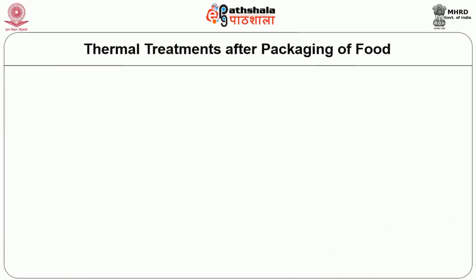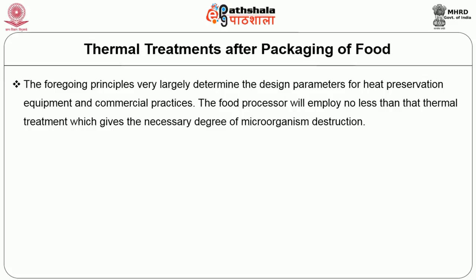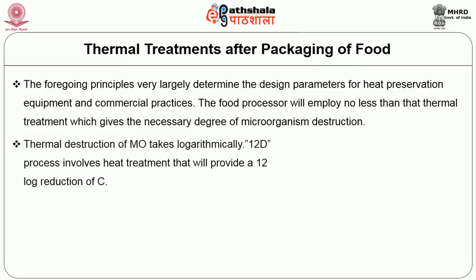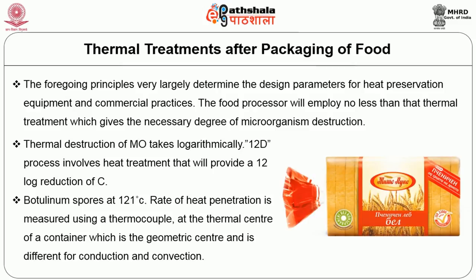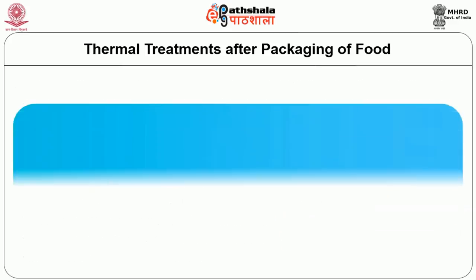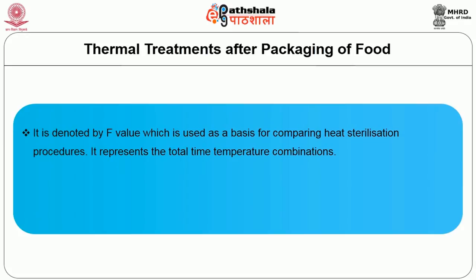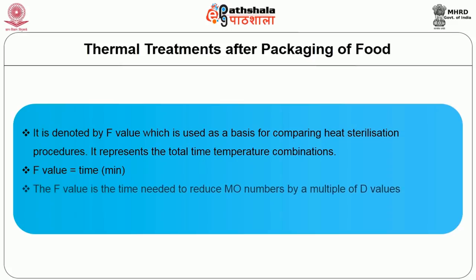Thermal treatment after packaging of food: the food processor will employ no less than the thermal treatment which gives the necessary degree of microorganism destruction. The thermal destruction of microorganisms follows the 12D process, involving a heat treatment that provides a 12 log reduction of Clostridium botulinum spores at 121°C. Rate of heat penetration is measured using a thermocouple at the thermal center of the container — the geometric center, which differs for conduction and convection heating. This is denoted by the F value, which represents a total time-temperature combination used as a basis for comparing heat sterilization procedures. F = D × (log N1 − log N2), with F₀ as the reference F value.